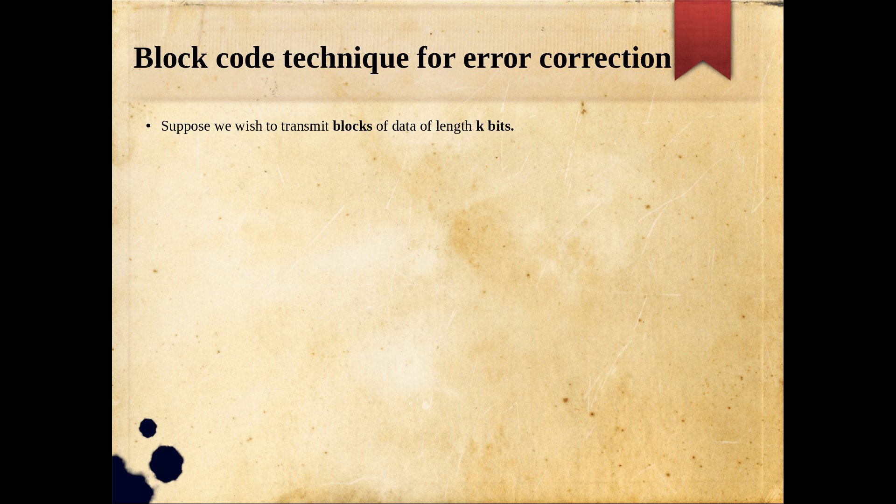Suppose we wish to transmit blocks of data of length k bits. The original message is divided into k-bit blocks and sent block by block — this may be called a frame in different contexts. Instead of transmitting the k bits directly, which would provide no error control, we map each k-bit sequence into a unique n-bit codeword. 'Unique' means it should not be mapped to more than one codeword, and generally n is greater than k.